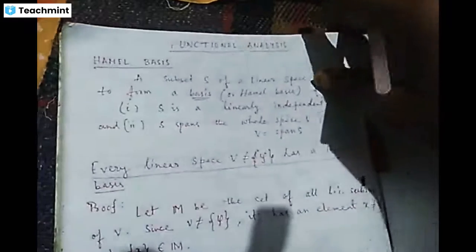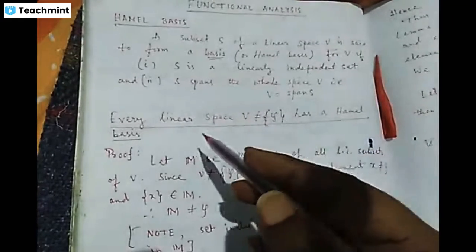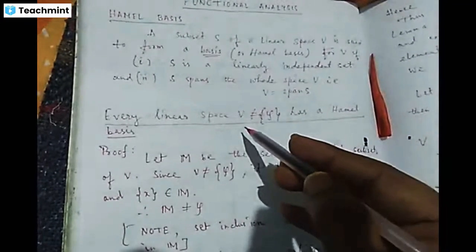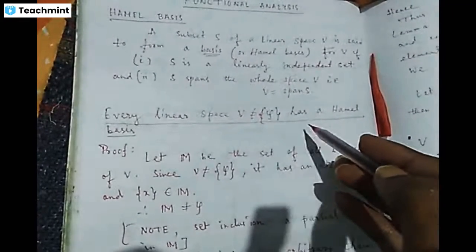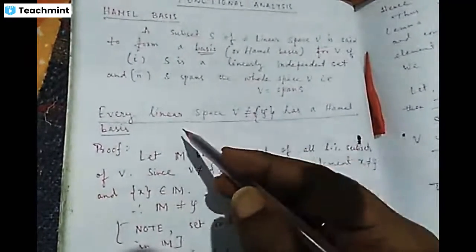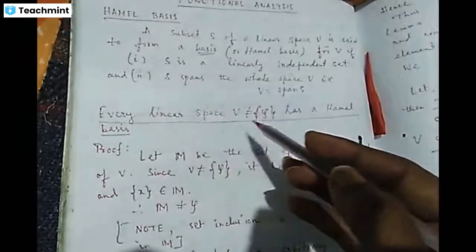An important theorem about Hamel basis: for any linear space V, if V is not equal to the null set — meaning V must have at least one element other than null — then V has a Hamel basis. Every linear space not equal to the null space has a Hamel basis. This is the theorem we have to prove.